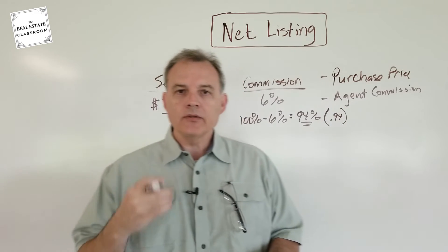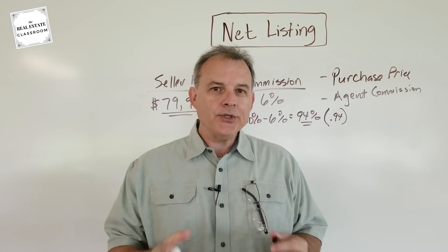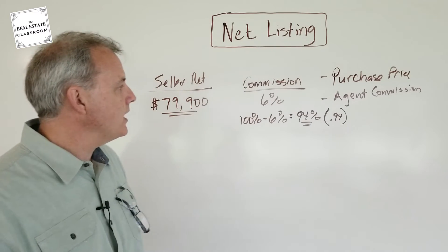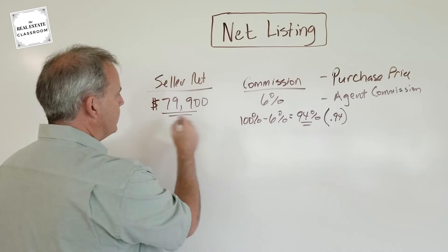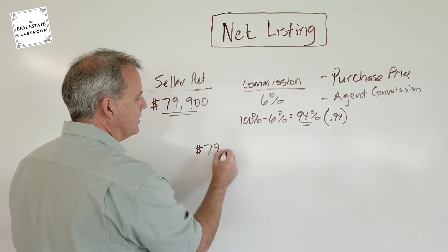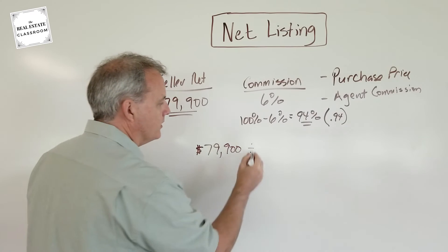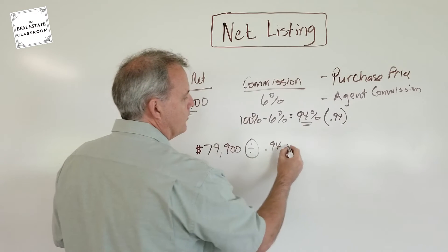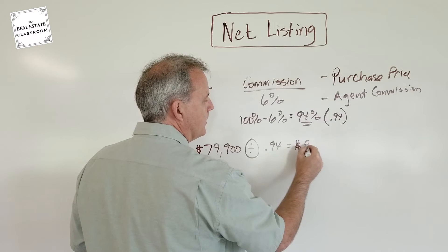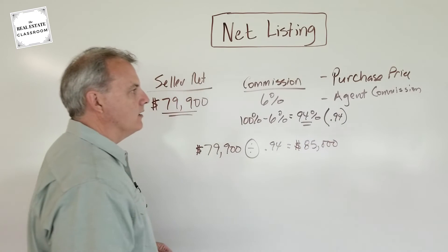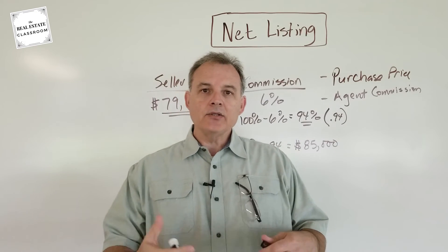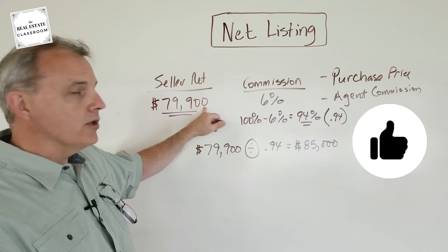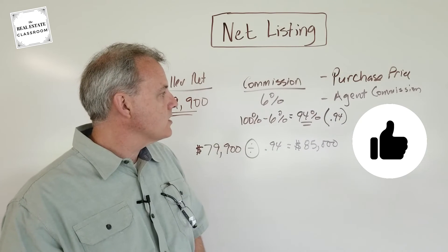Now let's figure out the purchase price — what it has to be to cover not only the seller net but also the 6% commission. We're gonna take the $79,900 seller net and divide it by 0.94. When we do the math on a calculator, we come up with $85,000. That $85,000 is the final purchase price that's gonna cover both the $79,900 seller net and the agent's 6% commission.